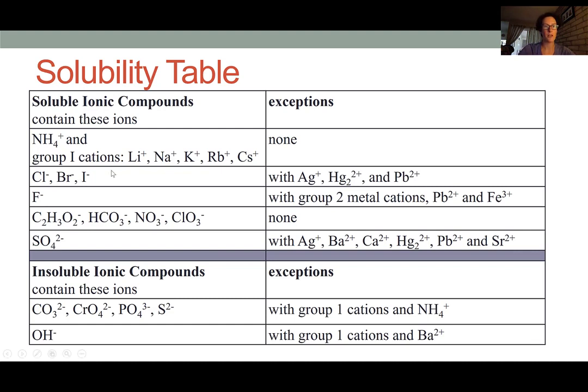However, there are exceptions. So if any of these halogen ions combines with either silver, mercury 2+, or lead 2+, it will form an insoluble product. So that is an exception to the general idea that chloride, bromide, and iodide are typically soluble.